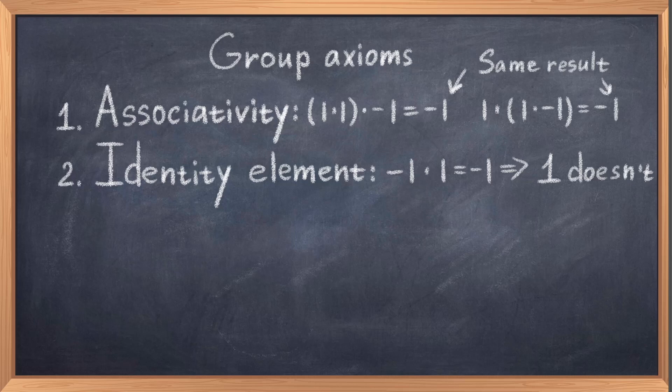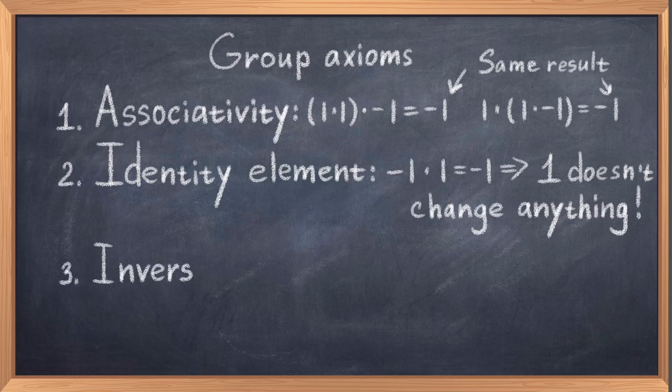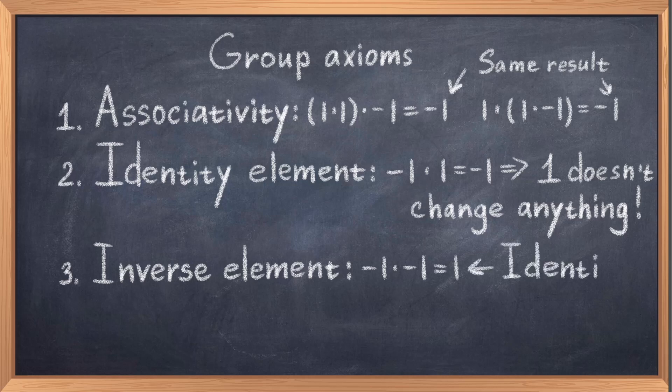The second requirement is that there must be an identity element, which means there must be an element that does absolutely nothing. In the case of our example, it would be to multiply with 1. If you multiply a number with 1, nothing happens. Finally, there must be an inverse element for every number such that you get to the identity element. Thus if you have minus 1, then multiplying with minus 1 gives you 1, which is the identity. Thus all three axioms are upheld in the Z2 group.